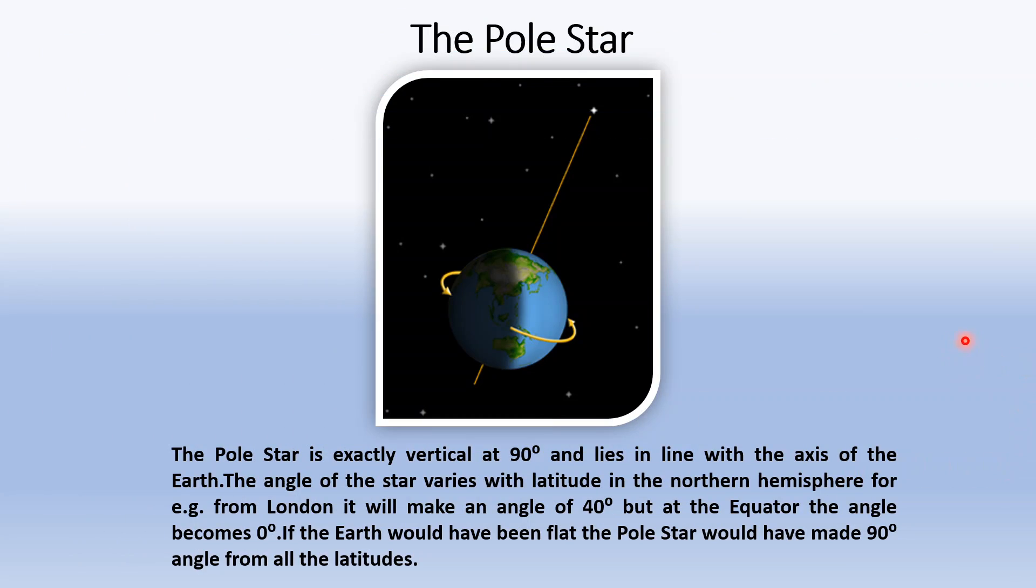As far as the pole star is considered, it is a star which can be seen from the Earth and it is one of the brightest stars. The pole star is exactly vertical at 90 degrees in the sky from the north pole and it is in line with the axis. The pole star is in line with the tilt of the Earth. The angle of the pole star varies with latitude in the northern hemisphere. For example, London which is at 40 degree latitude will make an angle of 40 degrees from the pole star.